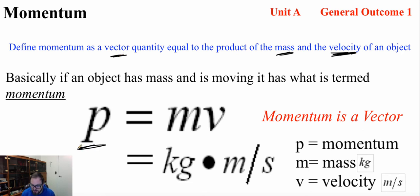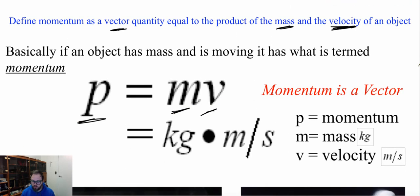So in other words, we have momentum, p is the symbol for momentum, is equal to mass times velocity. The units for momentum, therefore, are going to be kilograms meters per second.